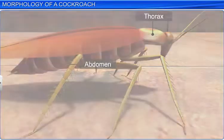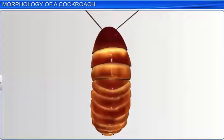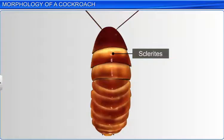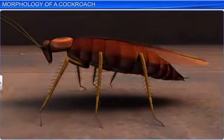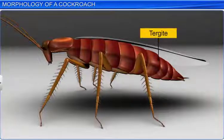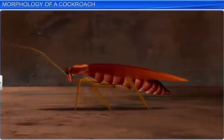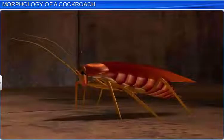In each segment, the exoskeleton has hardened plates called sclerites, which are joined to each other by a thin, flexible, articular membrane called the arthrodial membrane. The sclerites on the dorsal side are called turgites, and on the ventral side, they are called sternites.